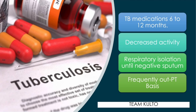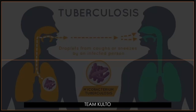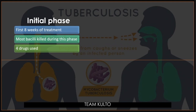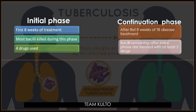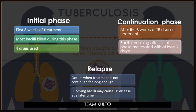Encouragement of compliance to treatment, including regular checkup on an outpatient basis, is part of medical management. The treatment of tuberculosis disease is divided into three phases: the initial phase, starting from the first 8 weeks of treatment, where most bacilli are killed using 4 drugs; the continuation phase, after the first 8 weeks, where bacilli remaining are treated with at least 2 drugs; and relapse, which occurs when treatment is not continued for long enough, allowing surviving bacilli to cause TB disease at a later time.